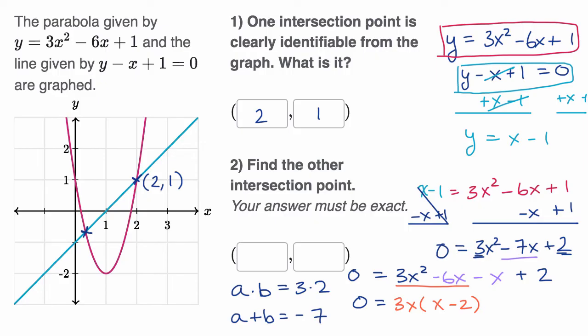And then these second two, I can factor out, in these second two, I can factor out a negative one. So I have negative one times x minus two.